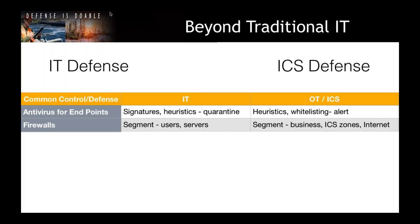Firewalls have been used for decades in IT with huge value, and they also have huge value in ICS — but used for slightly different purposes. In IT, you segment users, servers, and network segments based on services provided. In industrial control systems, you have fewer users, and firewalls are used to segment the business network from the ICS, and also to separate the internet from the industrial control system.